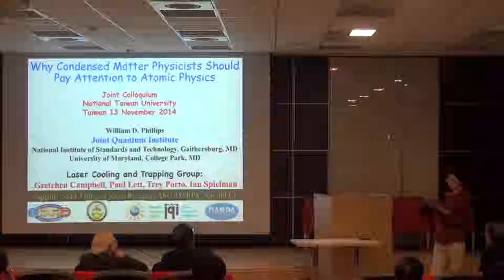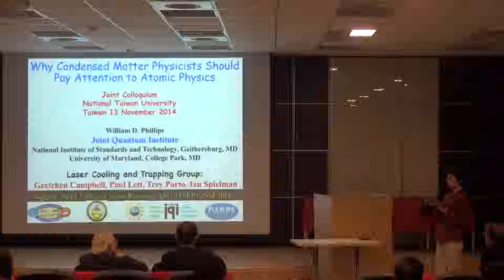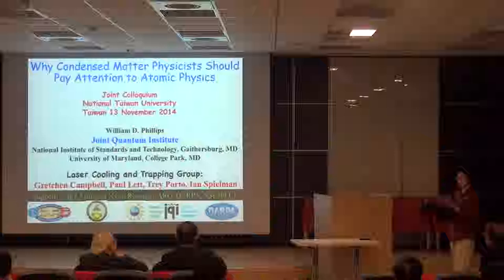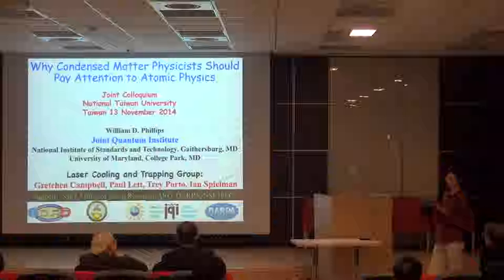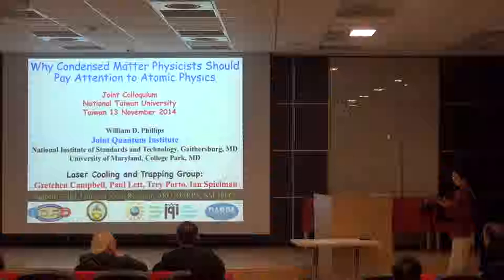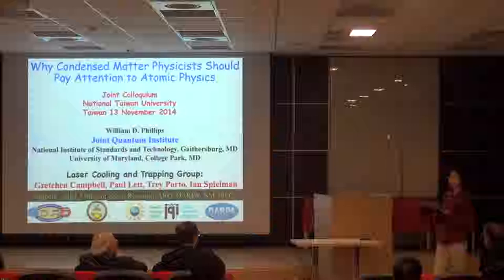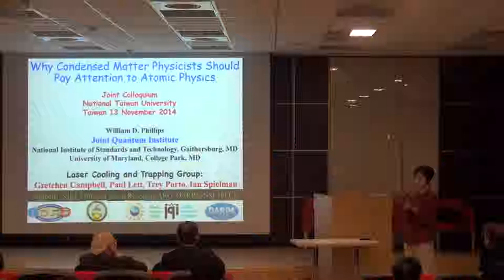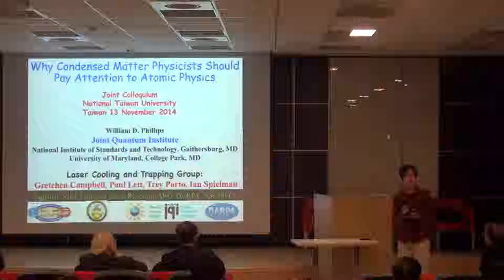Phil received his PhD from MIT in 1976, did a postdoc for two years, then joined the National Institute of Technology in 1978. He is currently the leader of the laser cooling and trapping group at NIST's physical measurement laboratory, a distinguished professor at the University of Maryland, and a fellow of the Joint Quantum Institute. In 1997, Phil shared the Nobel Prize in physics for the development of methods to cool and trap atoms.